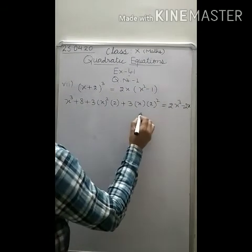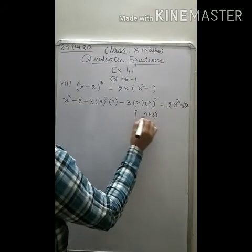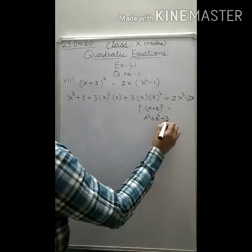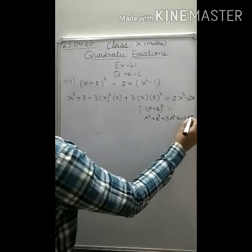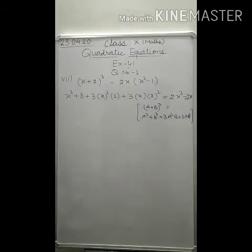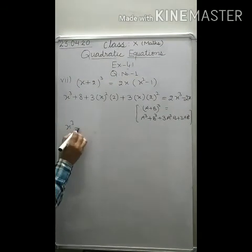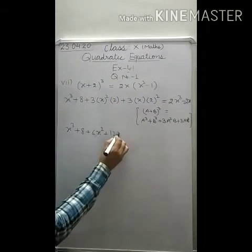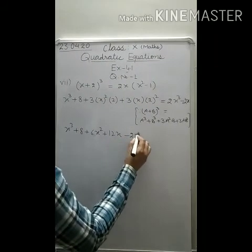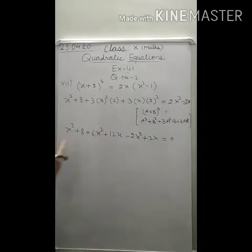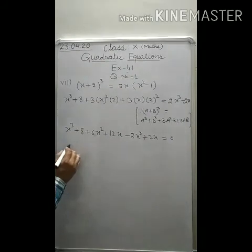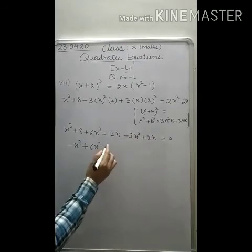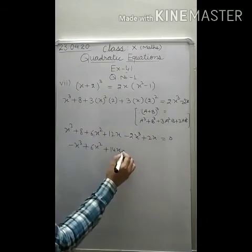Expanding and simplifying: the left side gives X³ + 8 + 6X² + 12X, and the right side is 2X³ − 2X. Transposing the right side to the left: X³ − 2X³ + 6X² + 12X + 2X + 8 = 0, which gives −X³ + 6X² + 14X + 8 = 0.